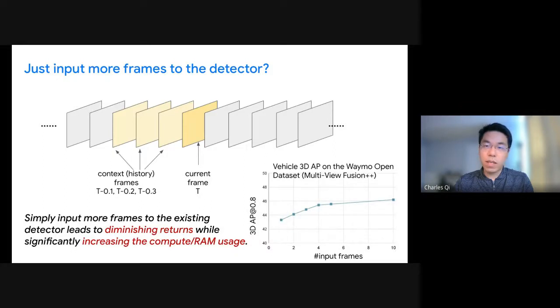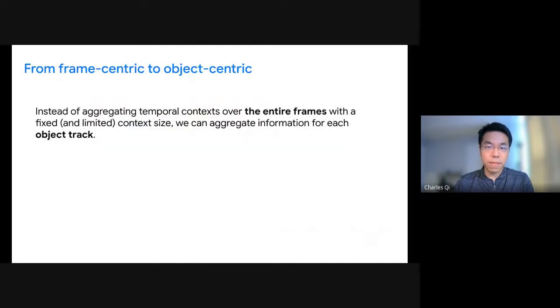So how do we leverage those temporal informations? A naive baseline would be using multiple frames as inputs to the existing detectors to use them as multi-frame detectors. Given the known sensor process, we can easily transform the point clouds from a few history frames to the current frame coordinates. However, doing so gives us quickly diminishing returns as we increase the number of input frames. As the figure in the bottom right shows, as we increase input frames to the detector from one frame to two frames, four frames, up to ten frames, we can see the incremental returns difference of adding more frames in terms of improving the 3D average precision is quickly diminishing. Besides adding more frames, it dramatically increases the compute and memory usage.